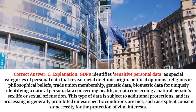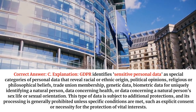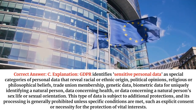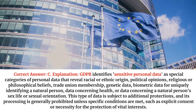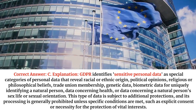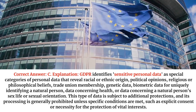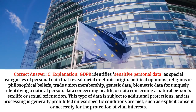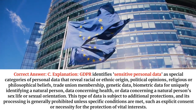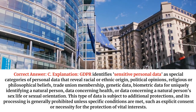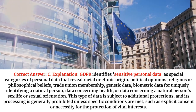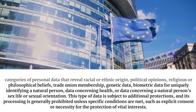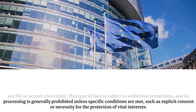Explanation. GDPR identifies sensitive personal data as special categories of personal data that reveal racial or ethnic origin, political opinions, religious or philosophical beliefs, trade union membership, genetic data, biometric data for uniquely identifying a natural person, data concerning health, or data concerning a natural person's sex life or sexual orientation. This type of data is subject to additional protections and its processing is generally prohibited unless specific conditions are met, such as explicit consent or necessity for the protection of vital interests.